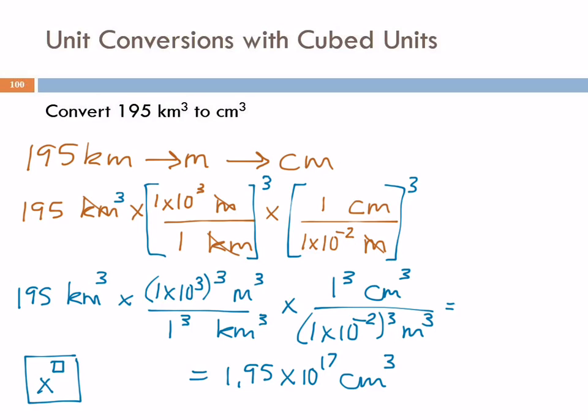Does that seem like a really large number? 1 times 10 to the 17th? It does seem pretty big. But let's think about, how big is a kilometer? That's on the order of a mile, right? That's a really long distance. And then we're talking about a volume that is 195 cubic kilometers. In each cubic kilometer, there's a lot of cubic centimeters. Cubic centimeters are little tiny things. So then coming up with a huge number like this is reasonable. Any questions?